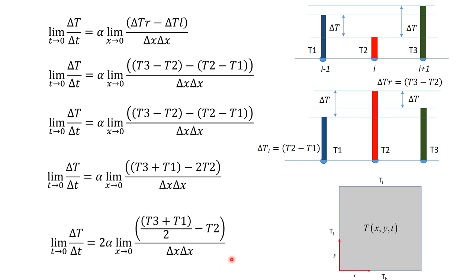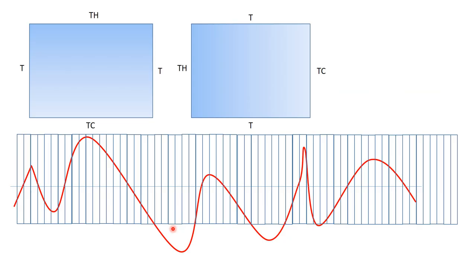The rate of heat transfer — or rate of temperature change with respect to time — depends on both external conditions and material properties. If any of them is increasing, then you will have a higher heat flow.